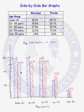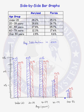Looking at the red graph, we see that 25.3% of Florida residents are under 20, 26.7% are between 20 and 39, 25.7% are between 40 and 59, 17.6% are between 60 and 79, and 4.6% are over 80.